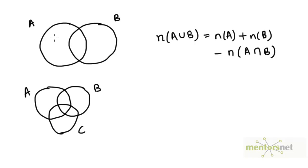Given two sets A and B, we know that the number of elements in A union B is the number of elements in A plus the number of elements in B minus the number of elements in their intersection.